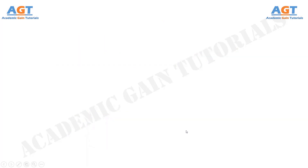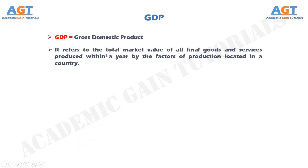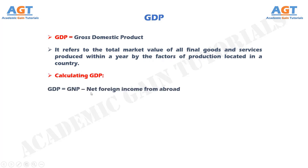The term GDP is the abbreviated form of Gross Domestic Product. It refers to the total market value of all final goods and services produced within a year by the factors of production located in a country. GDP is obtained by subtracting the net foreign income from abroad from GNP.